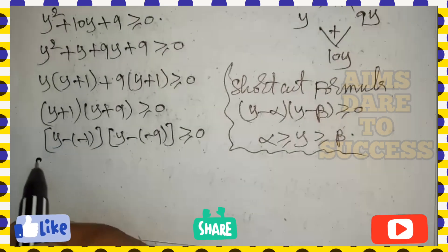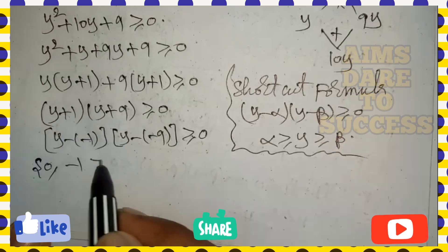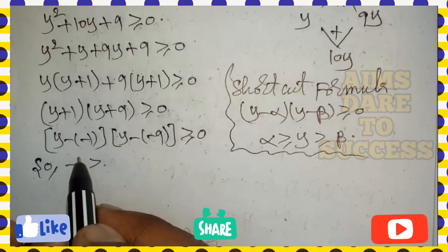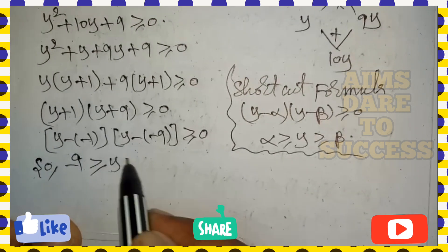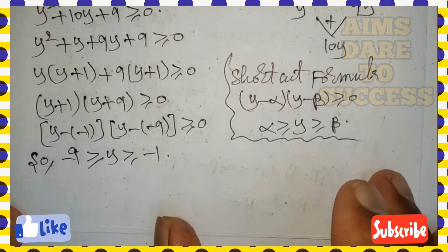So minus 1 is greater than or equal to, sorry, minus 9. So minus 9 is greater than or equal to y is greater than or equal to minus 1 is the range.